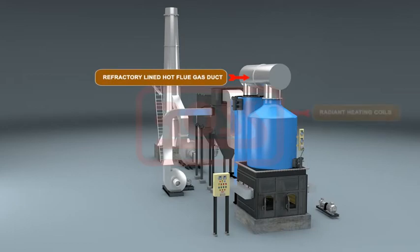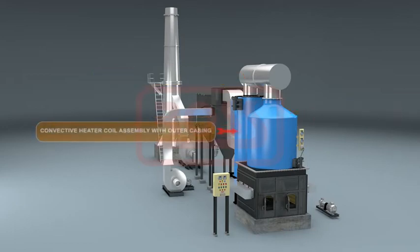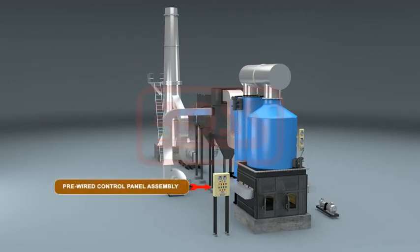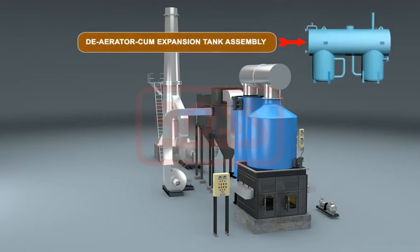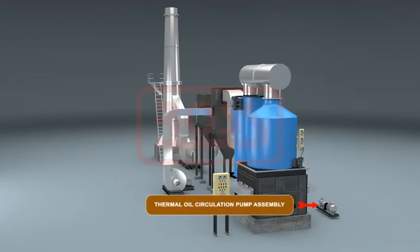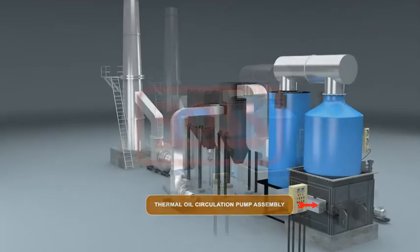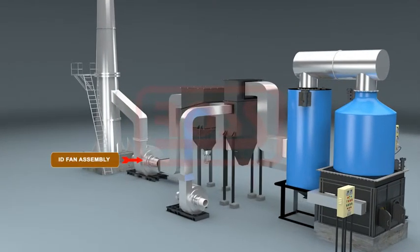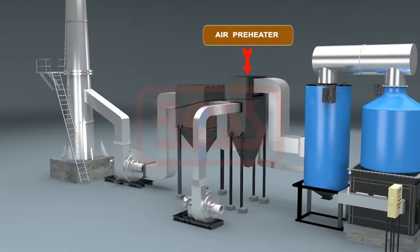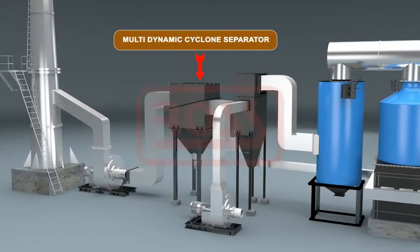Hot flue gas duct between radiant and convective heating coils, convective heater coil assembly without a casing, pre-wired control panel assembly, deerator cum expansion tank assembly, thermal oil circulation pump assembly, ID fan assembly, air preheater, multidynamic cyclone separator.